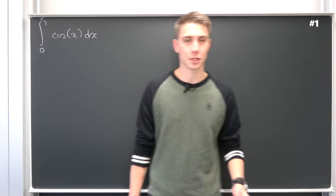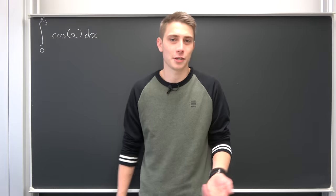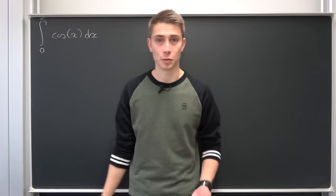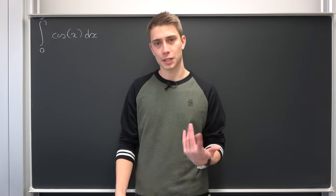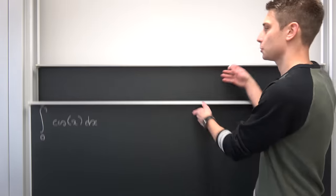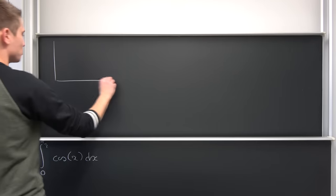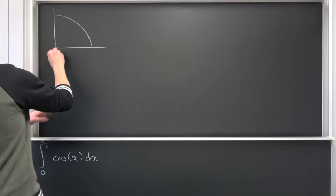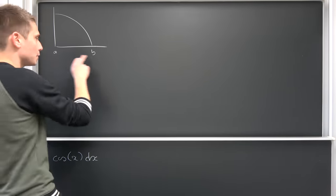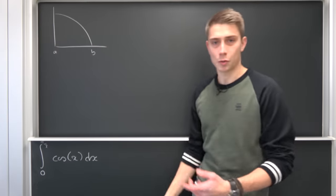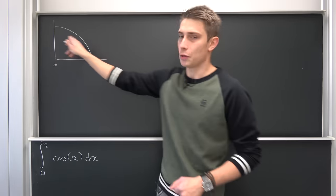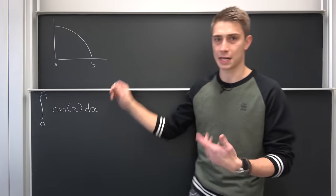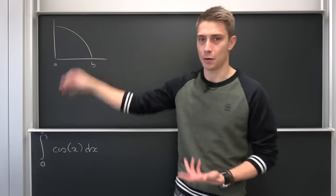The first approach is the one you might actually think about first: using the Riemann sum definition of this integral. We are going to take a look at the graph. Imagine we have the cosine on the interval from a to b. We want to evaluate the area under this curve, which is basically equivalent to calculating the integral — this thing has a certain measure, which is the area in this case.